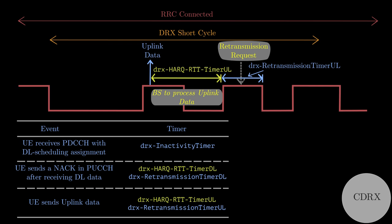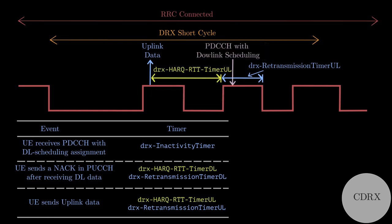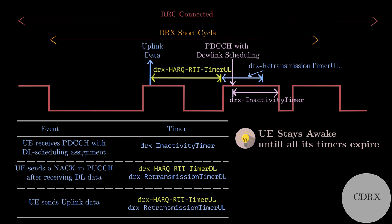These events can be co-occurring also. For example, while waiting for the request for retransmission, UE may receive downlink data. In that case, UE starts DRX inactivity timer and extends its wake-up duration until all timers expire. In summary, UE stays awake until all its timers expire.